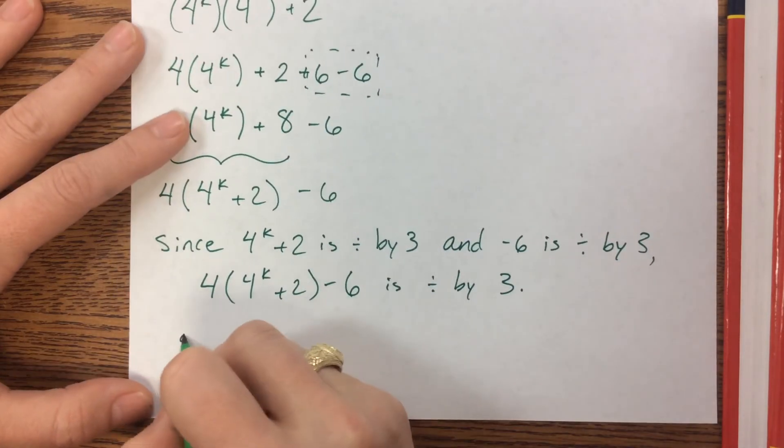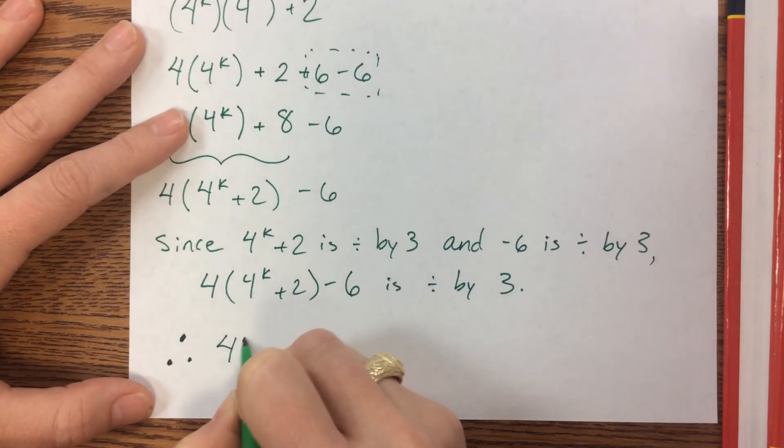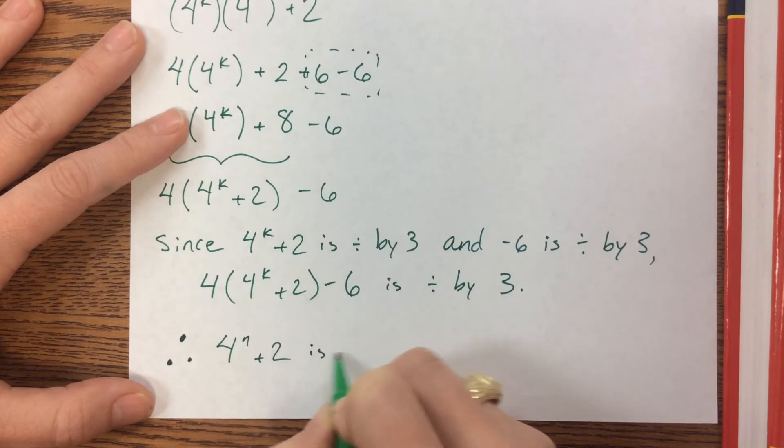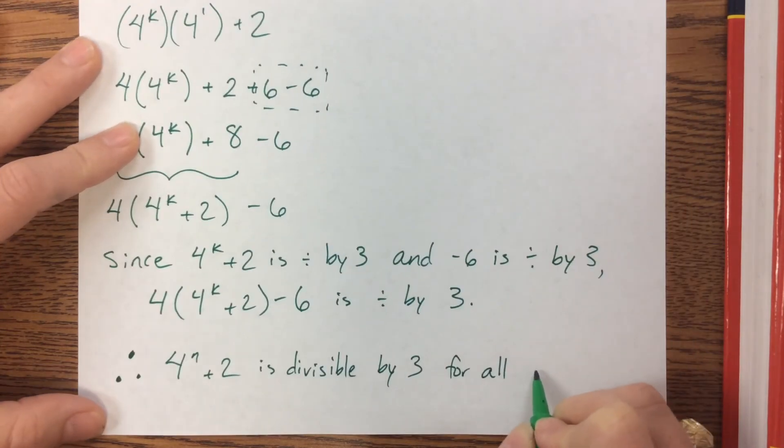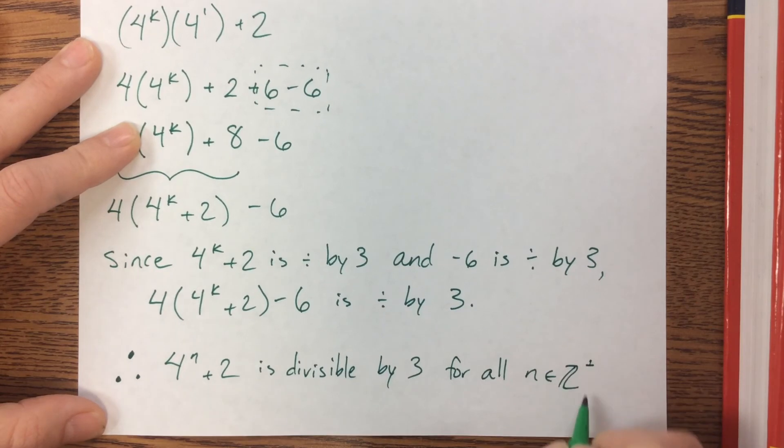And our final statement, we always like those therefore statements. Therefore 4 to the n plus 2 is divisible by 3 for all n element of the positive integers.